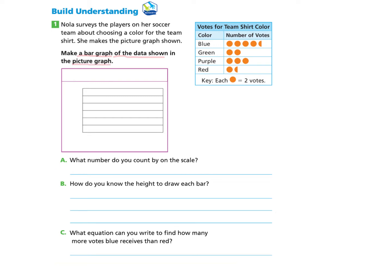So let's take a look at this picture graph or pictograph. The title of this says Votes for Team Shirt Color. So we're going to use the same title for our picture graph. And then we notice that we have the color here and the number of votes here. And our key lets us know that each circle represents two votes.